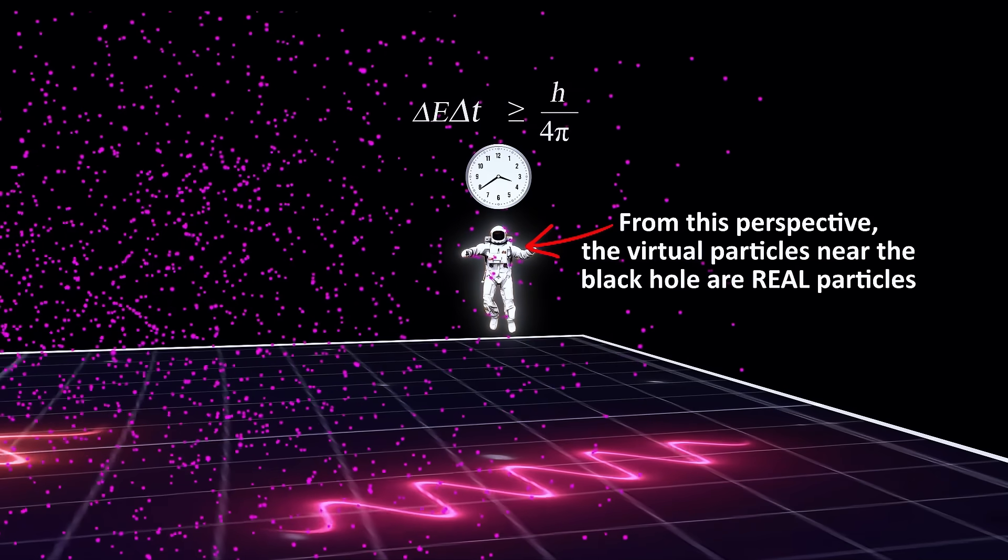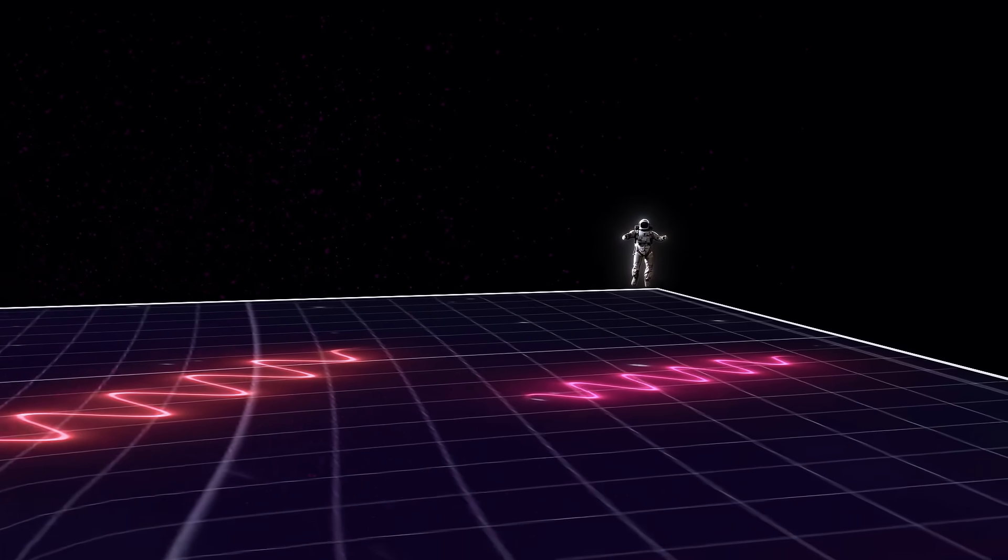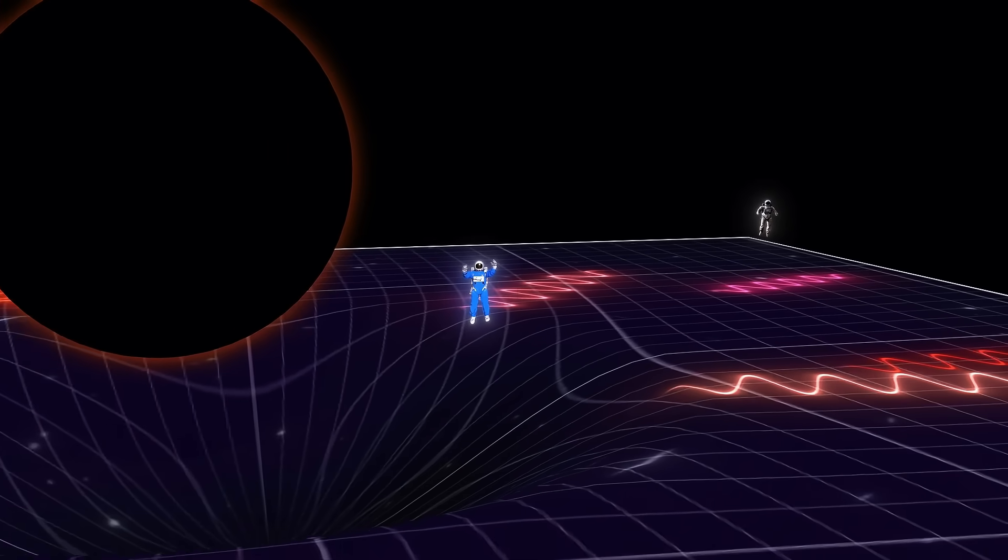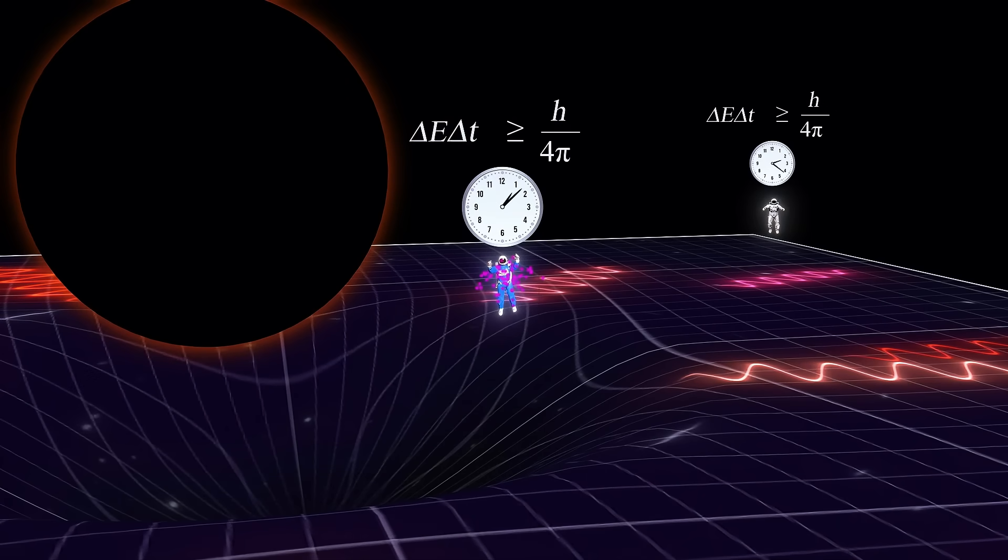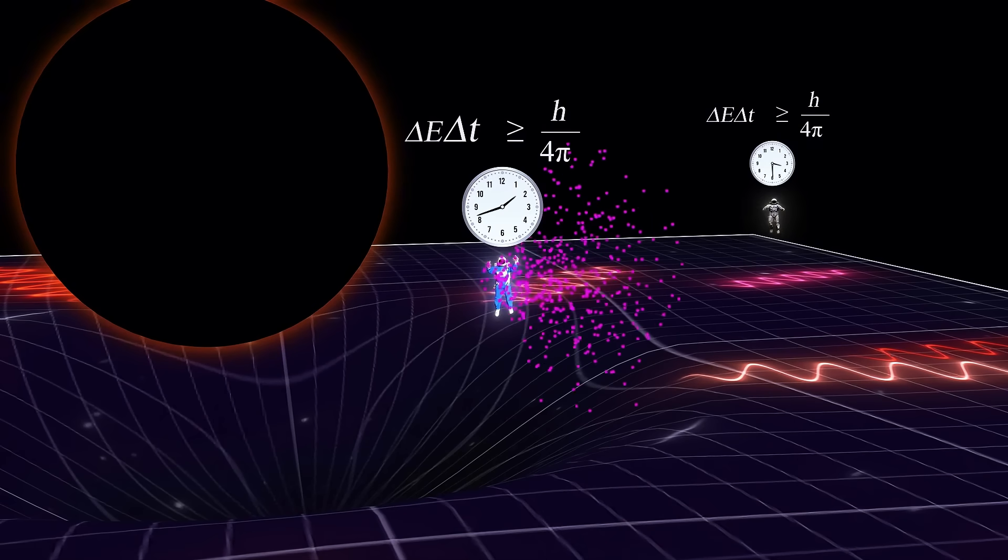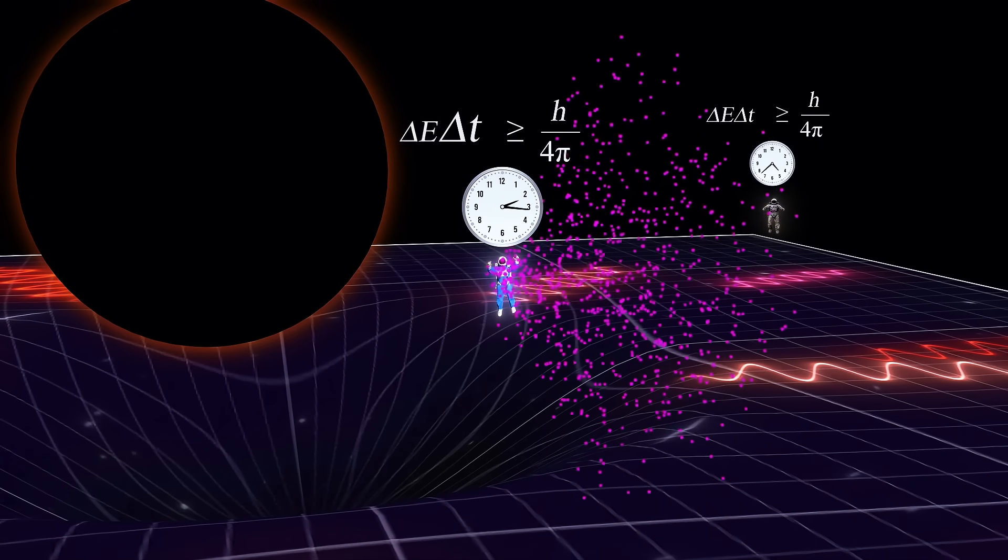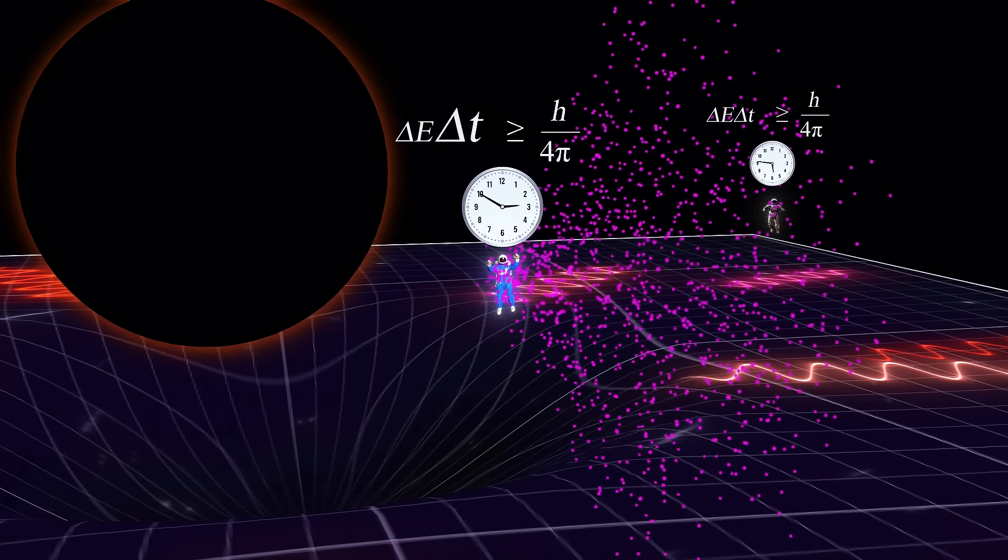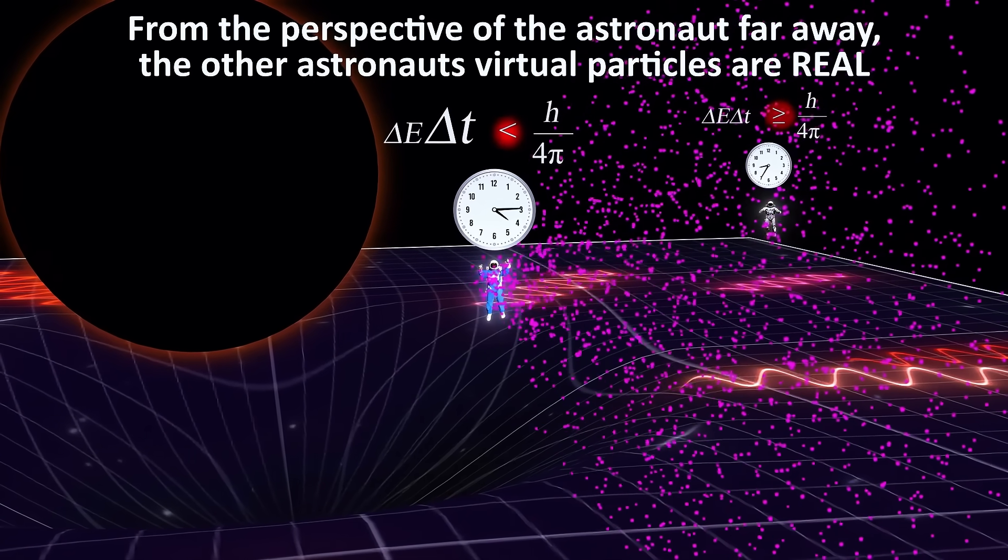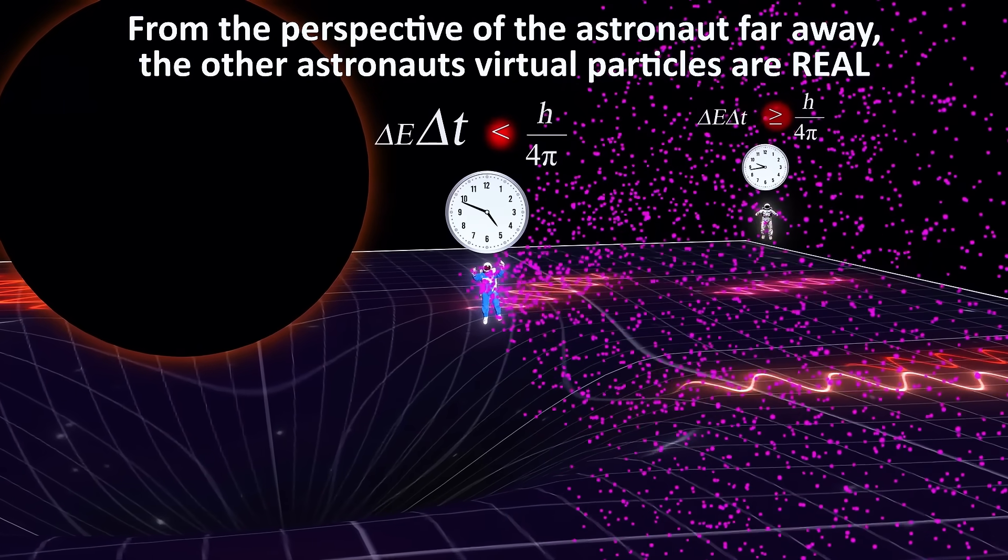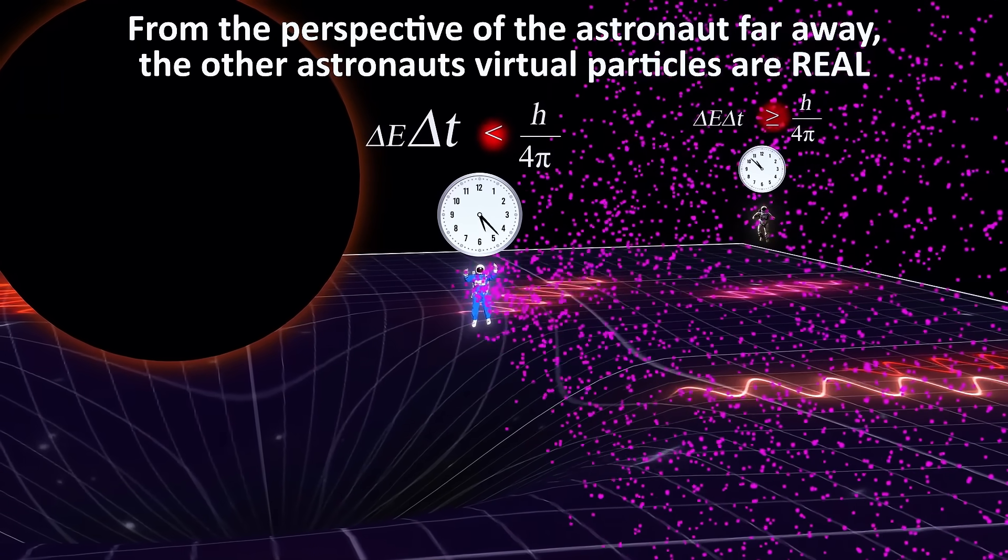This has to do with relativity. The ticking of time is different. Since time ticks more slowly for the person in the gravity well relative to the person far away, the delta t term in the uncertainty equation will be different. The uncertainty in time times the uncertainty of energy will be such that those virtual particles in the well will no longer be virtual, but real particles, as perceived by someone standing far away.